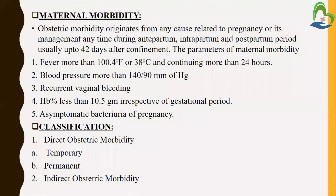Starting with the topic, maternal morbidity rate is defined as obstetric morbidity originated from any causes related to pregnancy or its management any time during the antepartum, intrapartum, and postpartum period. So the mother has three phases during the pregnancy. During all these phases, obstetric morbidity can originate due to causes of pregnancy or its management. If there is malpractice in management of the pregnancy, then this kind of morbidity rate is increased.